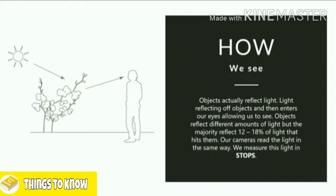Our cameras work the exact same way — they read the light reflected off everything around us, based on the principle that 18 percent of the light is being reflected off objects. The camera doesn't know what's been put in front of it, but it makes an assumption that the light bounced off it is about 18 percent of the light that hits it. This is where our light readings begin — where our light meter begins to read the light.